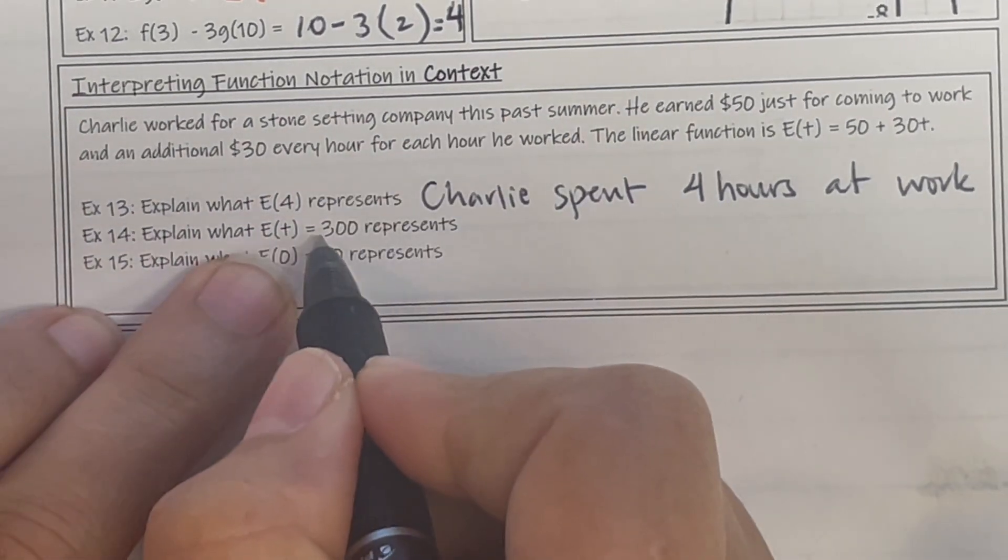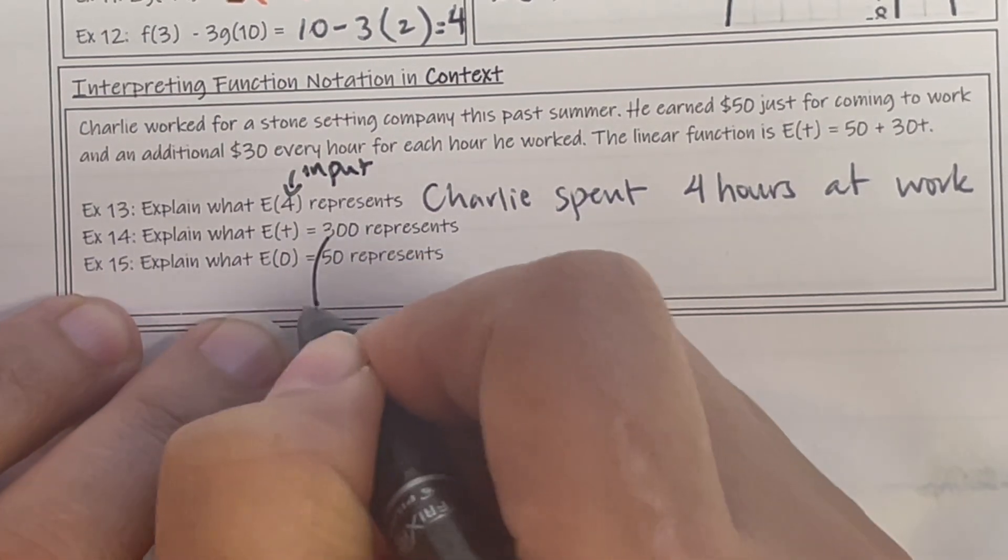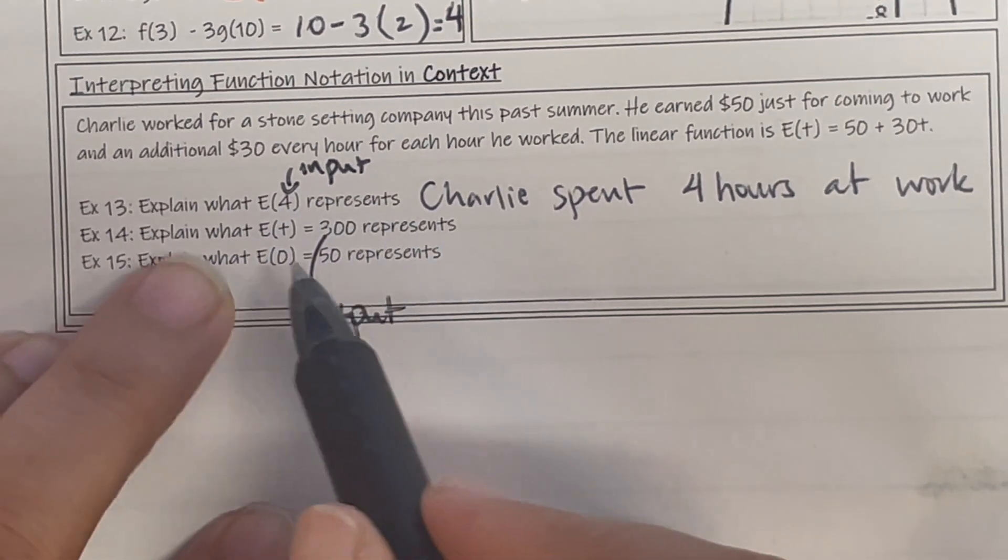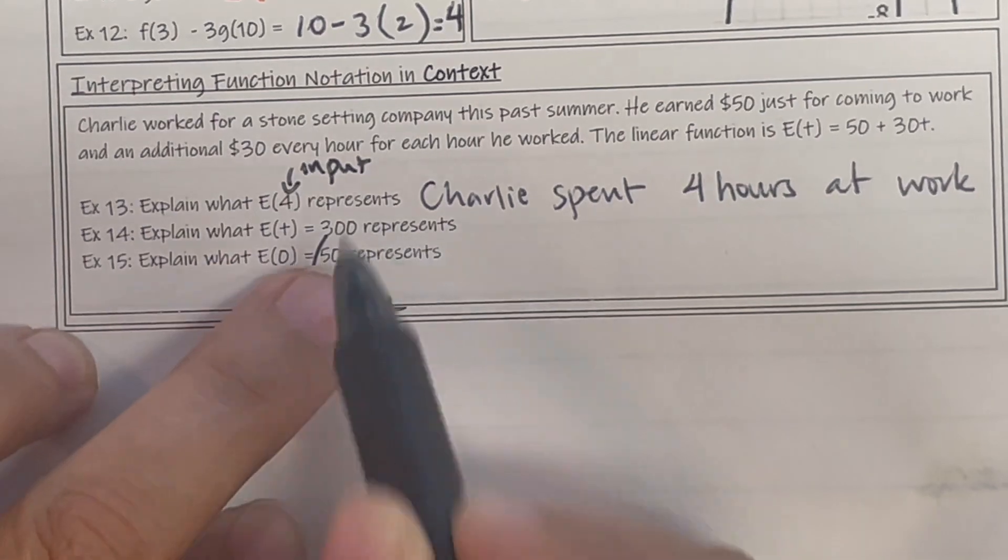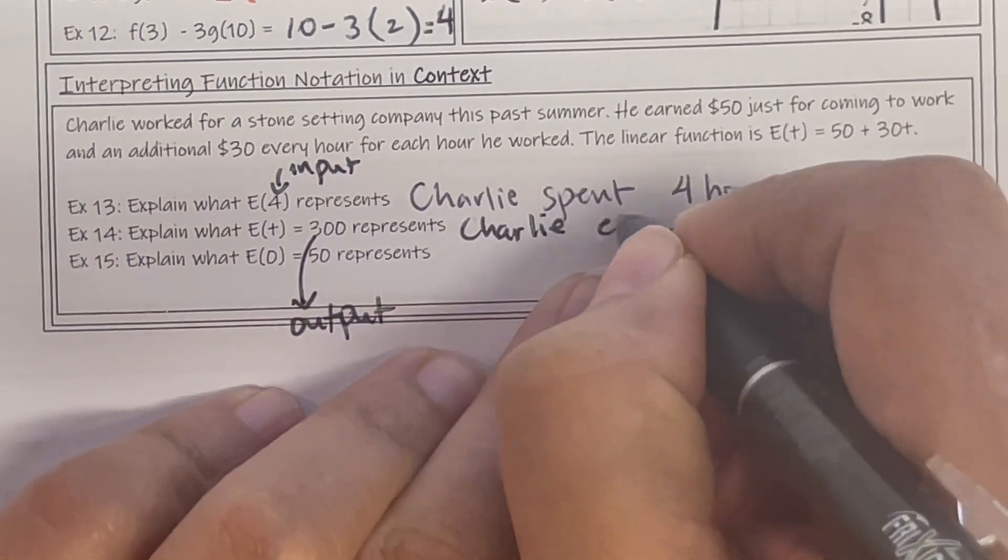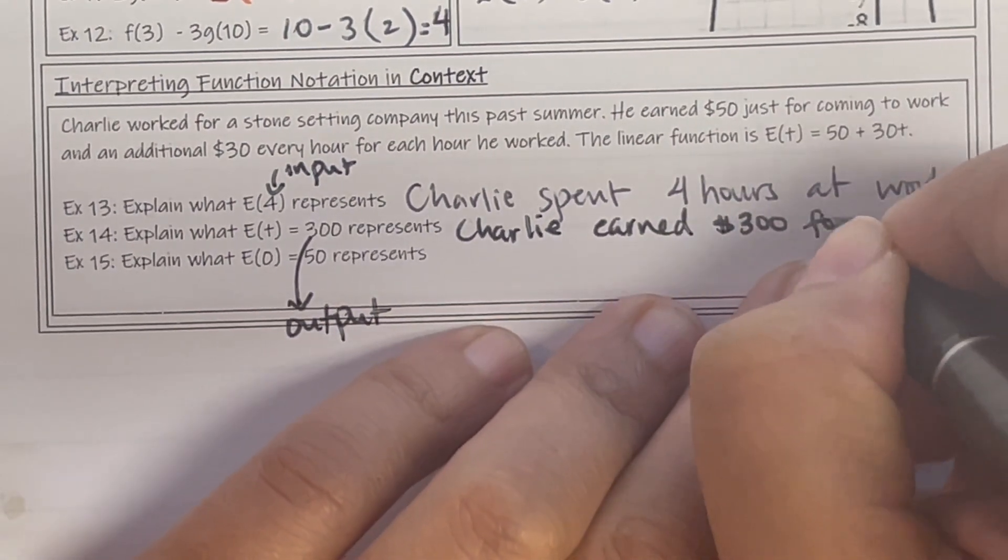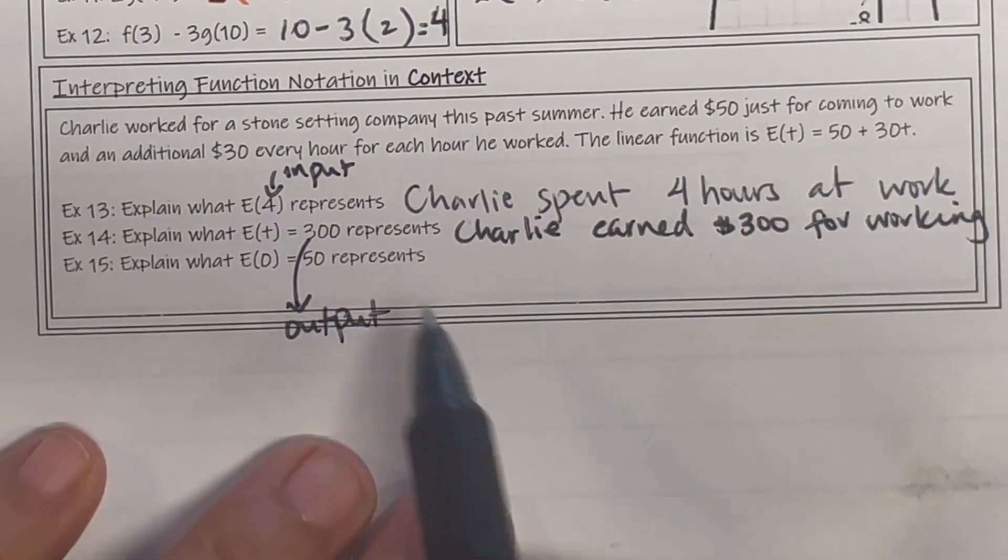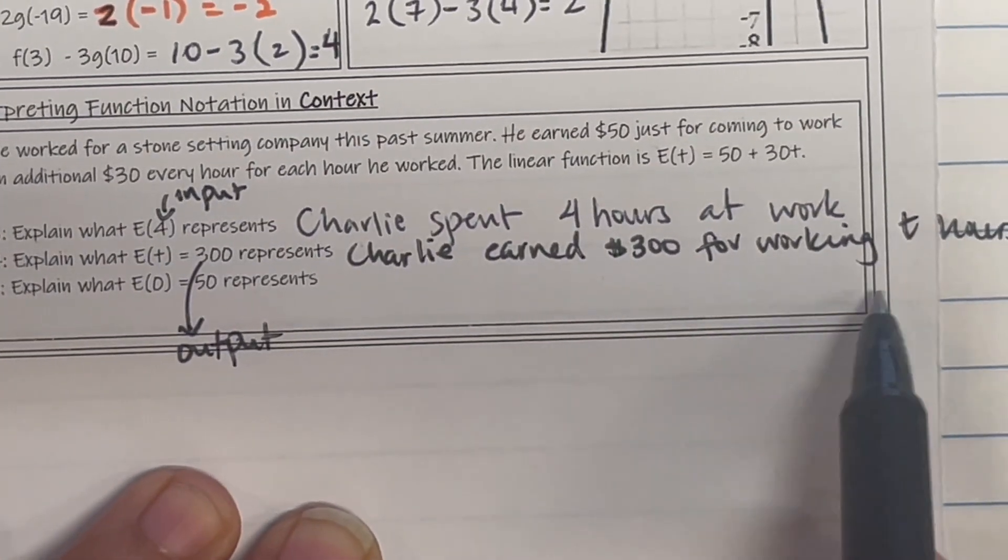Explain what E(t) = 300 means. So remember this right here is my input and this right here is my output. So this is what I put in and this after the equal sign is what I get out. So what do you think it means when I say E of t, and t standing for time? So no matter what time I put in, I'm going to get $300. So what does that mean? Charlie earned $300 for working a certain number of hours, for working t hours. Again, the number in the parentheses is my input, the number after the equal sign is my output.